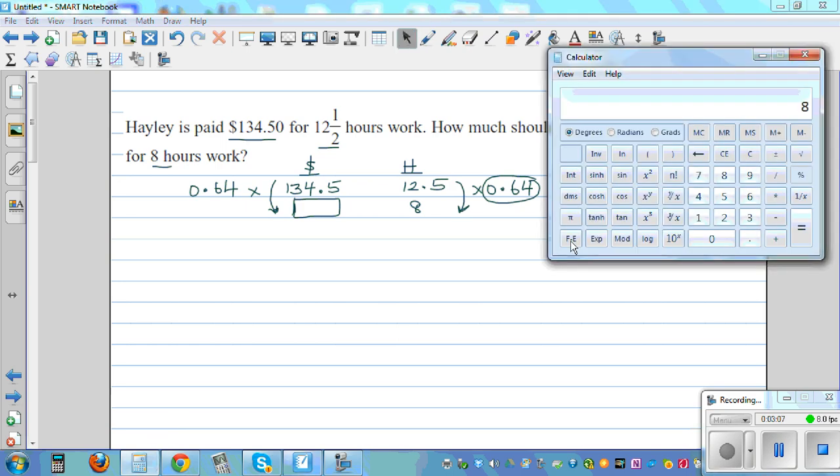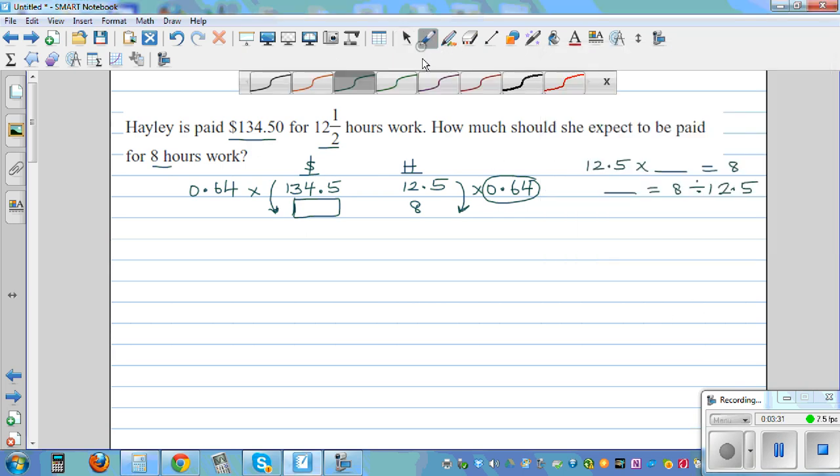So now I should go $134—there are different ways of doing this—times 0.64, which is 86.08. So this should be $86.08.